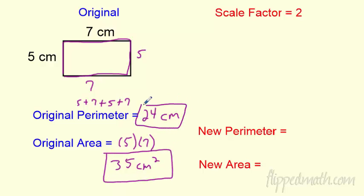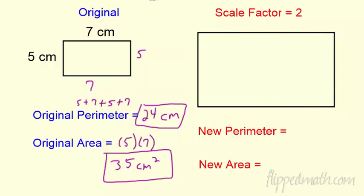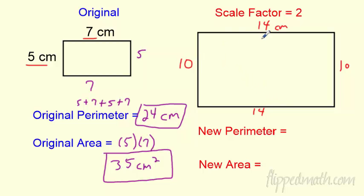Now let's take this shape and apply a scale factor of two — make it twice as big. The new dimensions: twice five is 10, twice seven is 14, still in centimeters. So the new perimeter is ten plus fourteen plus ten plus fourteen. That equals 48 centimeters.